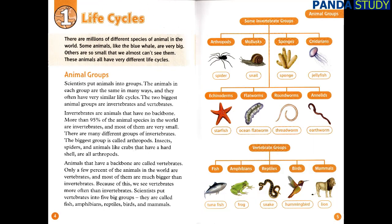Chapter 1: Life Cycles. There are millions of different species of animal in the world. Some animals, like the blue whale, are very big. Others are so small that we almost can't see them. These animals all have very different life cycles.